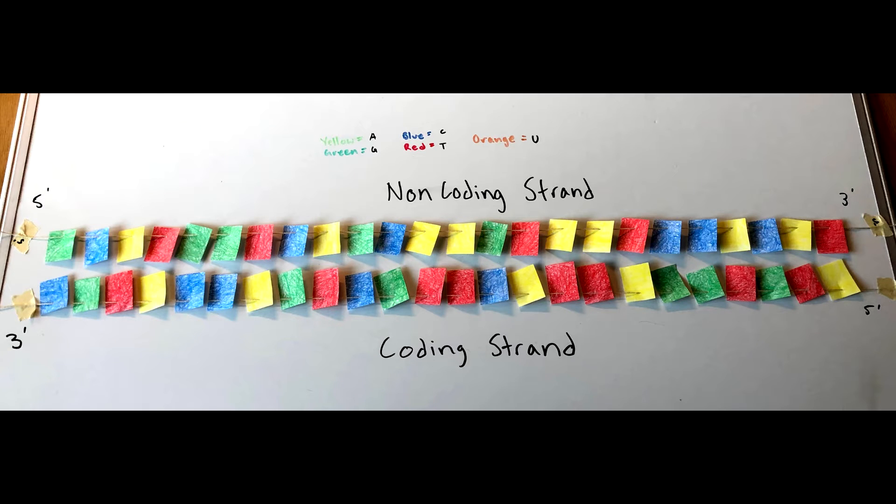I will be showing the effects of point mutations on an amino acid sequence. The top strand is non-coding and the bottom strand is the coding strand. That is the strand that will be used to make mRNA.